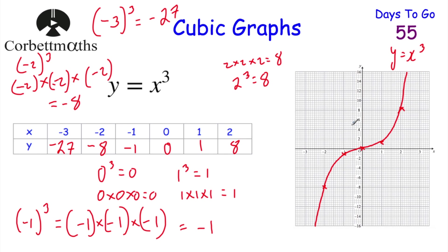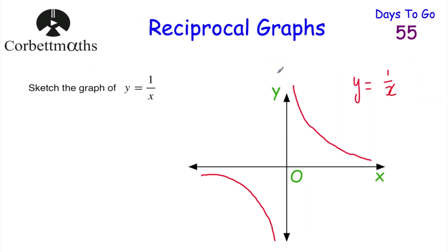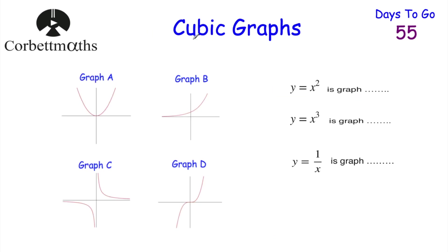We've had a look at the cubic graph and the reciprocal graph. Now let's look at a question for you to try yourself. Here we've got four graphs — graph A, graph B, graph C, and graph D — and three equations. We've been asked to identify which graph matches which equation: y equals x squared, y equals x cubed, and y equals 1 over x. Pause the video now and try this question.